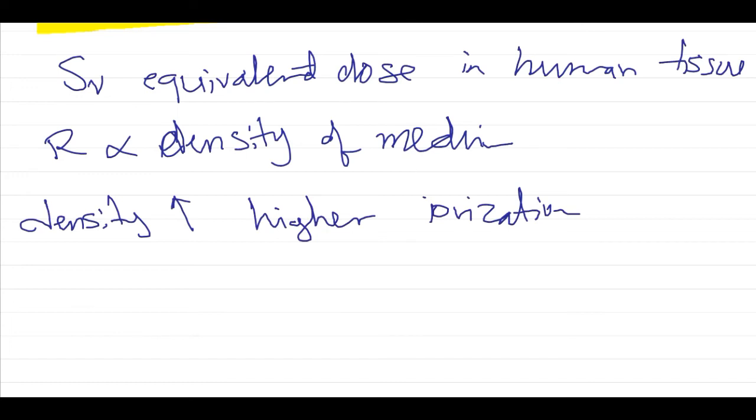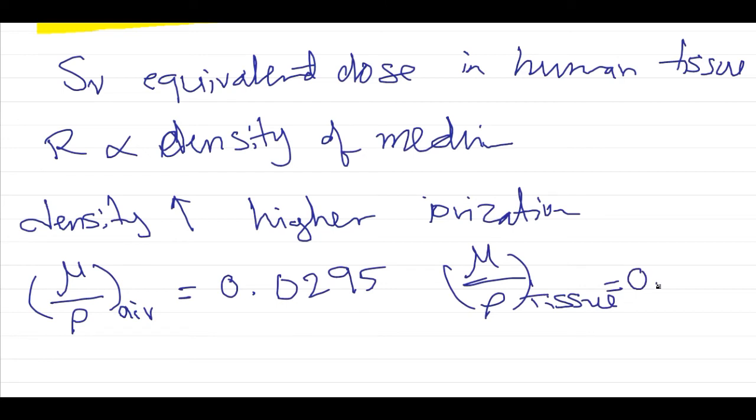We also know from the mass attenuation coefficient, mu over rho, the mass attenuation coefficient for air equals 0.0295, and mu over rho for tissue equals 0.0325.